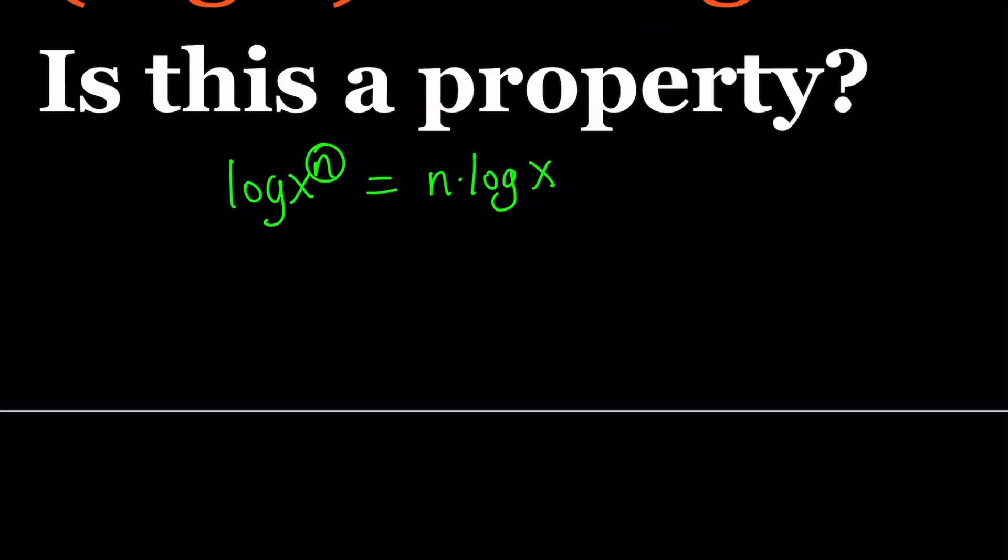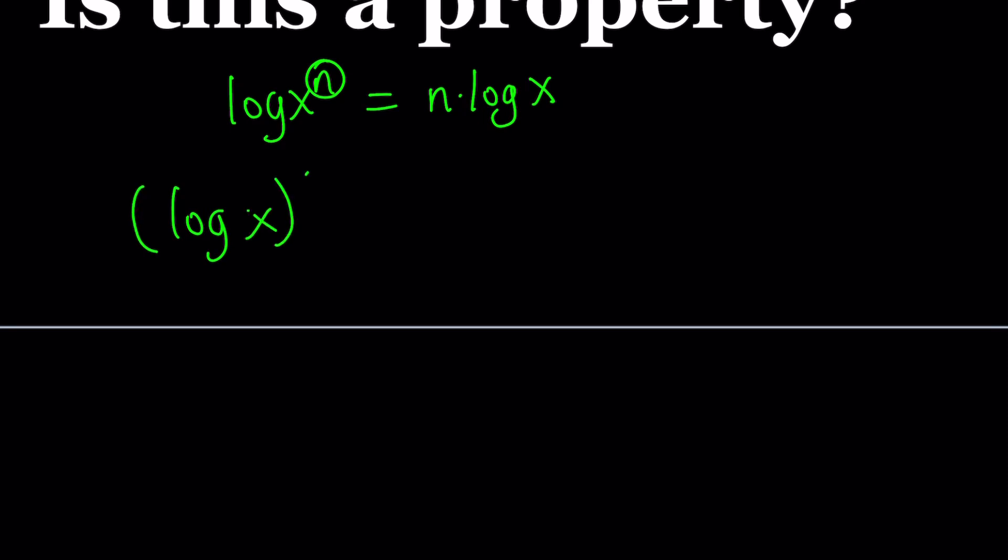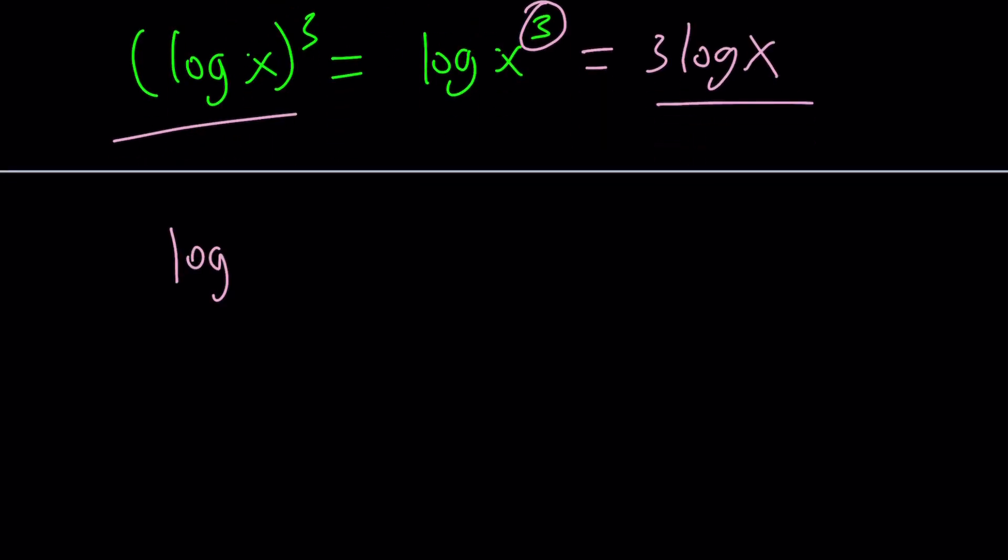So here's how it goes. Log x to the third equals log x cubed. And now I can use the power property, bring this to the front, and that becomes 3 log x. So we have this equals this. Let's go ahead and rewrite it. Log x to the third power equals 3 log x.